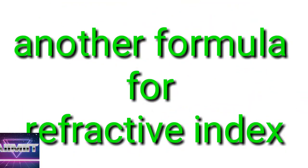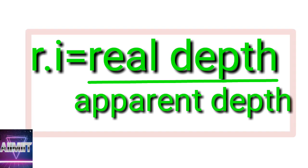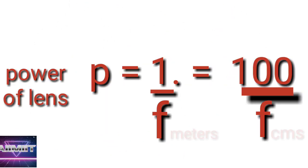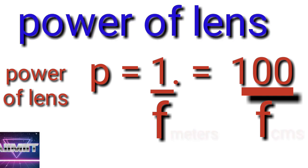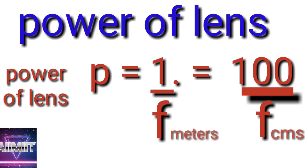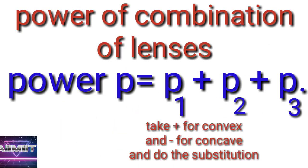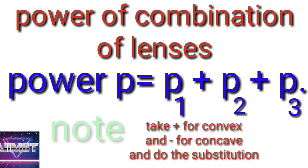Another formula for refractive index is real depth by apparent depth. Actually not given in textbook, but it may be useful sometimes. Next, number 16: Power formulas are 1/f if it is in meters, or 100/f if focal length is given in centimeters.